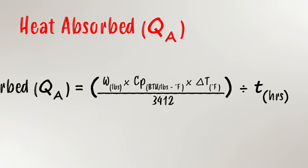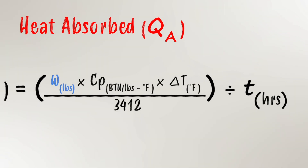It uses four different values: the mass, which is in pounds; specific heat, which is BTUs per pound per degree Fahrenheit; the temperature change, which is in degrees Fahrenheit; and the heat-up time, which is in hours.